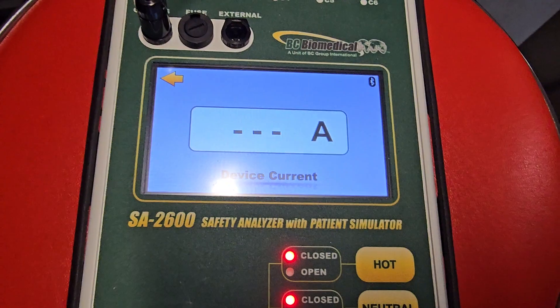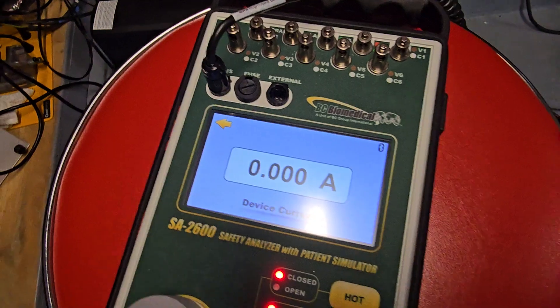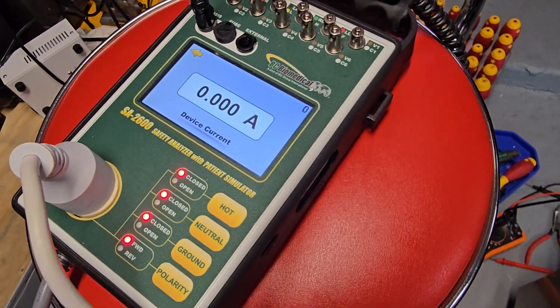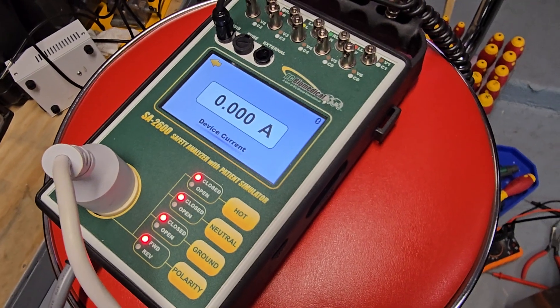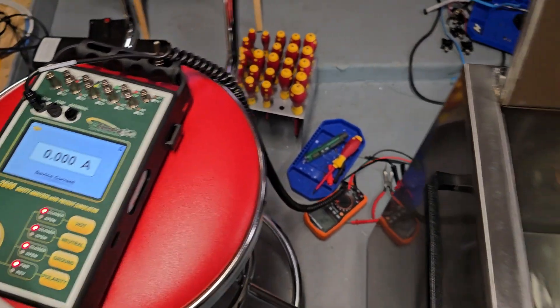Go down to device current and I use device current quite a bit whenever I've got a device that's questionable, it's not heating up correctly. If I have a motor that's making some weird noises you can use device current for a lot of things. I really dig that they put it right here on the main menu.